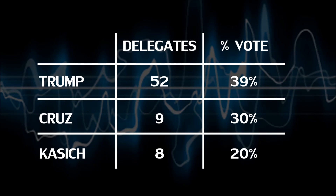This didn't happen in every district, of course, and in fact most districts a single candidate took all three delegates, sometimes by narrow margins, which is arguably not a desirable outcome either. Between the way districts broke down and the 15 delegates for the statewide winner, you end up with a situation where a candidate picked up 75% of the delegates in the state with less than 40% of the overall vote. I don't know about you, but I'd call that a little awkward.